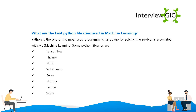What are the best Python libraries used in machine learning? Python is one of the most used programming languages for solving problems associated with machine learning. Some popular Python libraries are TensorFlow, Theano, NLTK, Scikit-learn, Keras, NumPy, Pandas, and SciPy.